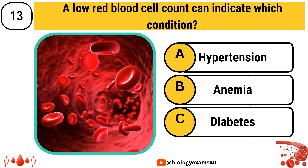A low red blood cell count can indicate which condition? Option A: Hypertension, Option B: Anemia, Option C: Diabetes.